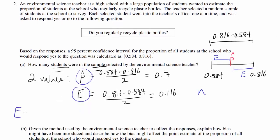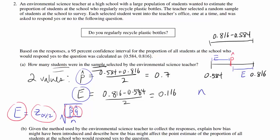You know the equation for the margin of error: E equals Z sub alpha over 2 times the square root of p-hat times q-hat all divided by n. We know E, we know p-hat, and from that we know q-hat. And do we know Z sub alpha over 2? Yes, because it's a 95% confidence interval.